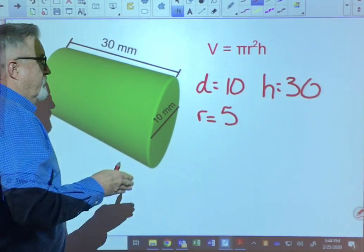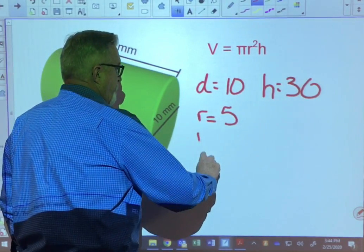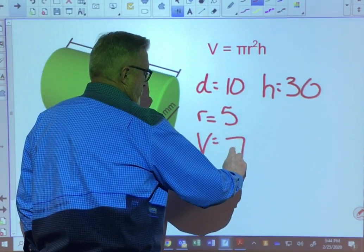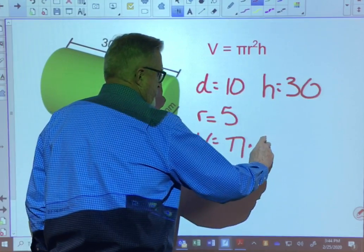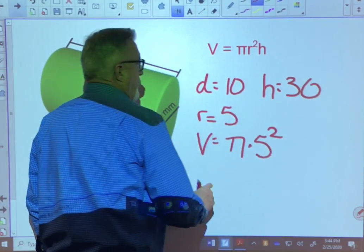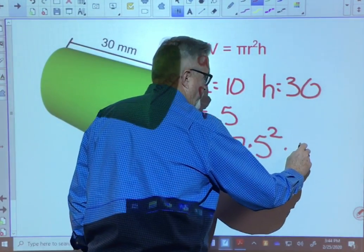So when we plug this into our formula, we're going to say volume is equal to pi times the radius squared, so 5 squared, and then times the height. Well, the height is 30.